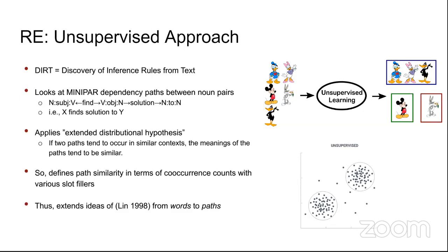The distributional hypothesis states that if two words appear in the same context repeatedly, they are probably related. Extended to paths: if two paths tend to occur in similar contexts, their meanings are similar. DIRT defines path similarity based on co-occurrence counts in the corpus, extending the idea of word similarity from 1998 to path similarity.